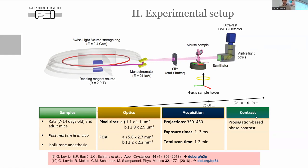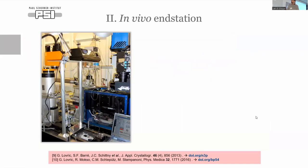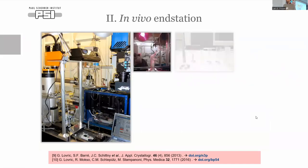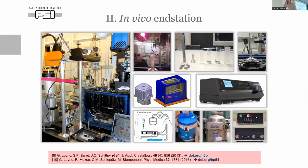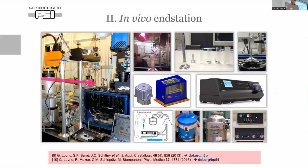The scan time is largely determined by the heart rate — since we have to take images triggered with the heartbeat, this makes the total scan time much longer, but if you sum up only the actual exposure time it's below a second. This is the end station we've been developing, featuring a small animal ventilator and ECG all connected with the detector and the rotation axis system.